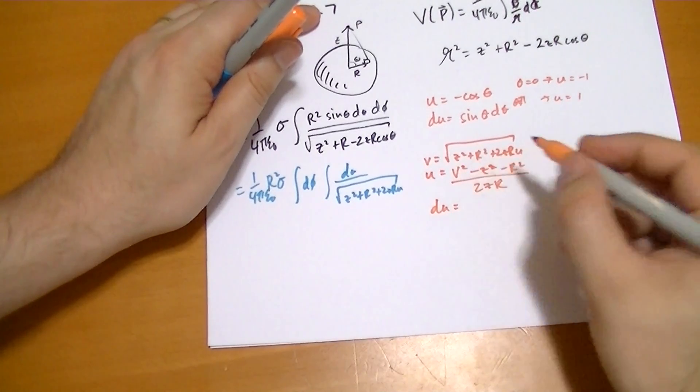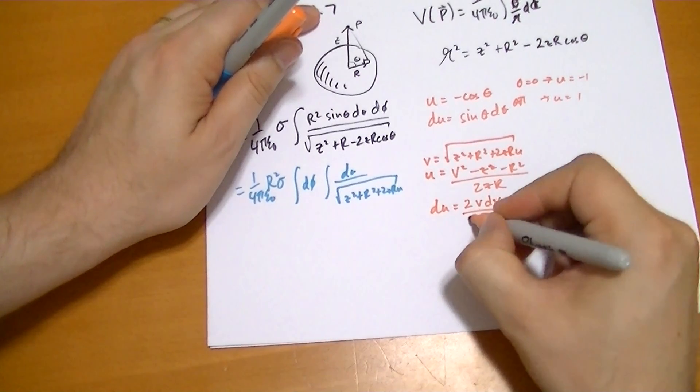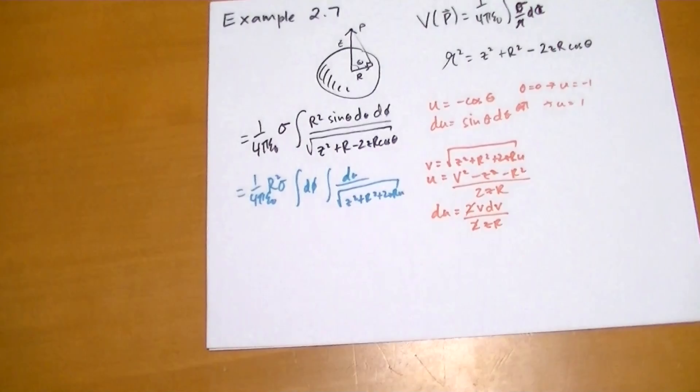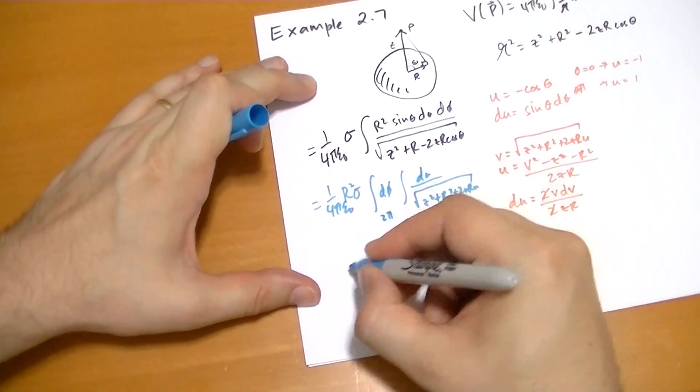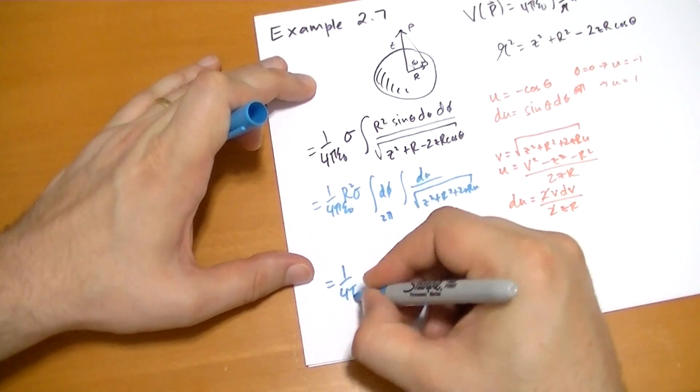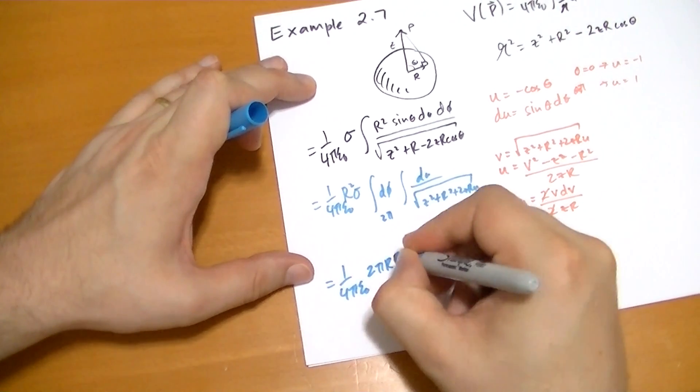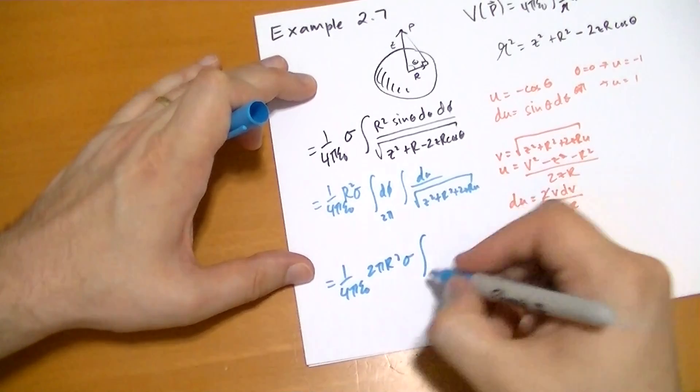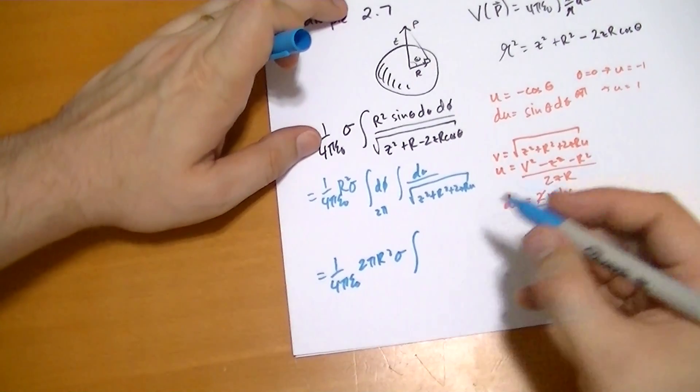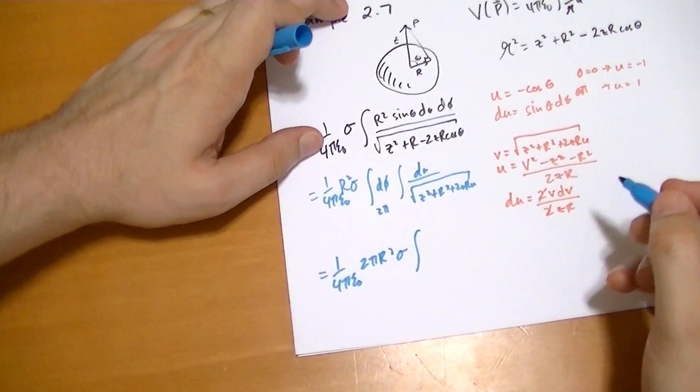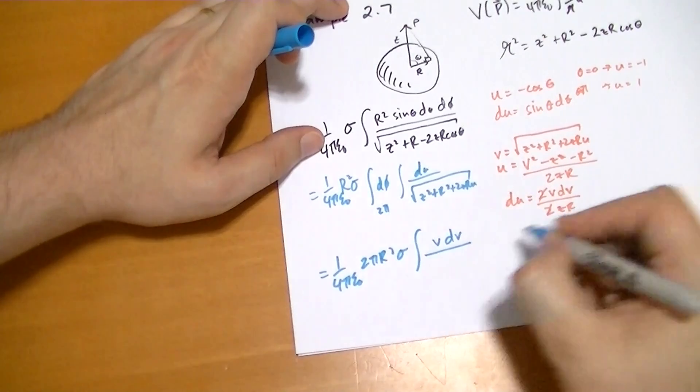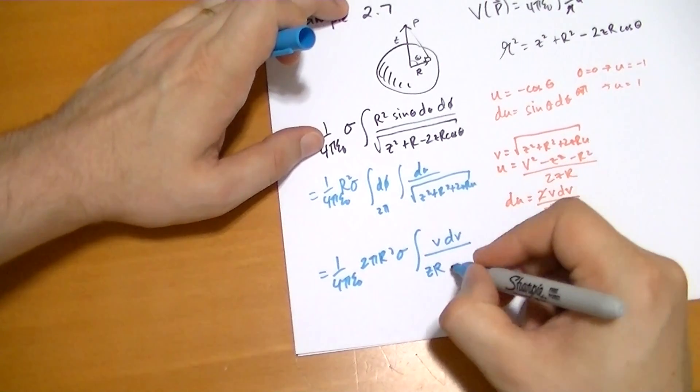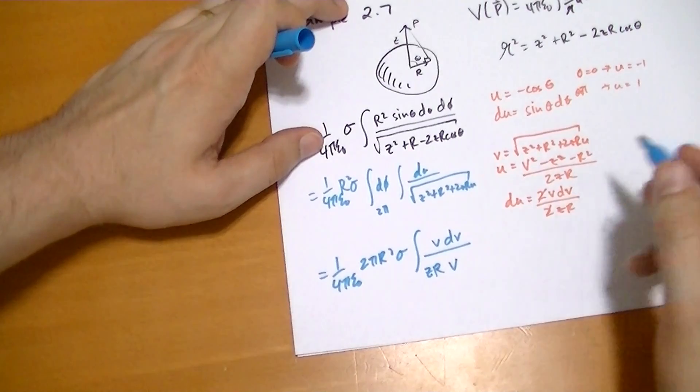And du is equal to 2 v dv all over 2 z r, and the 2's cancel. So now we have, I'm going to pull this 2 pi out. That's just 2 pi. Integral from du is v dv all over z r, and this is all v. So then we have these 2 cancel.